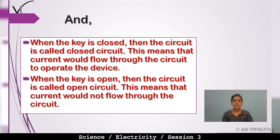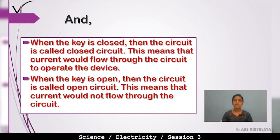When the key is closed, the circuit is called a closed circuit — current flows through the circuit to operate the device. And when the key is open, the circuit is called an open circuit. This means that current would not flow through the circuit.